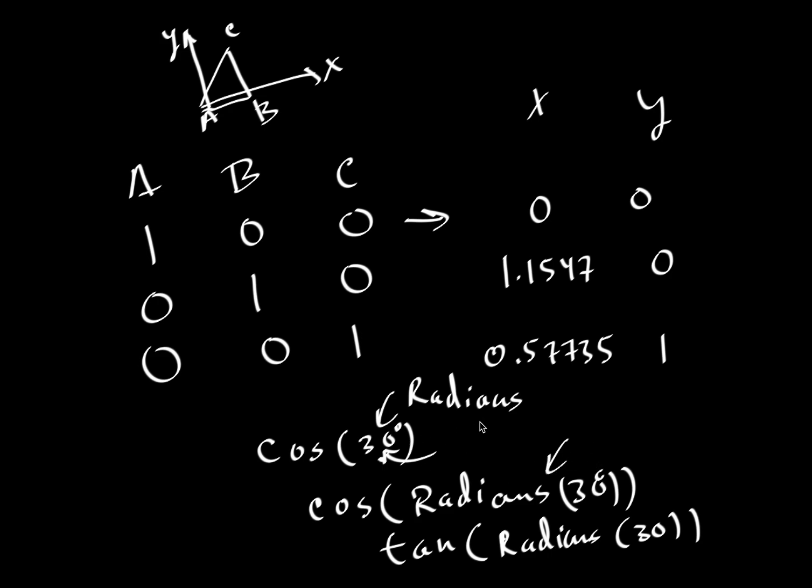I will do another example in Excel itself, but these are the basic equations and how they work to translate triangular components A, B, and C into XY coordinates that can be plotted using the XY scatterplot function in Excel.